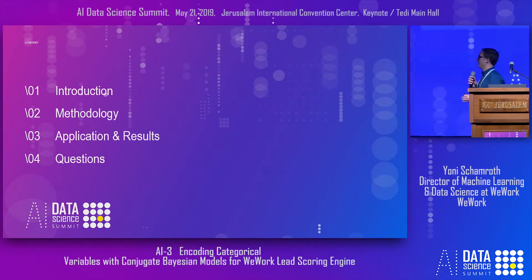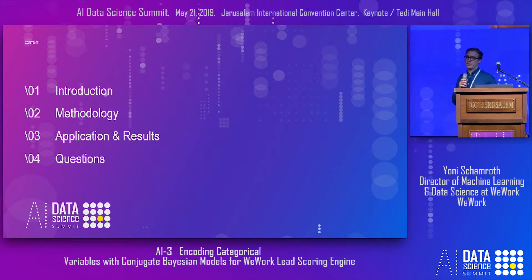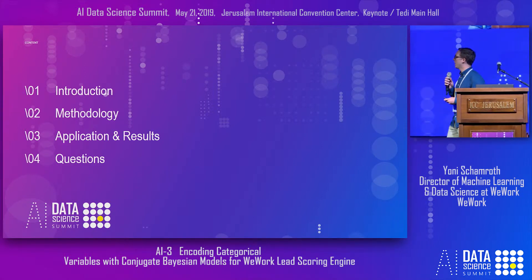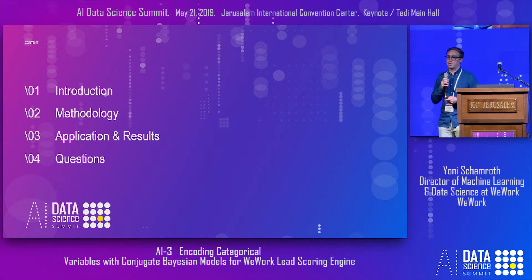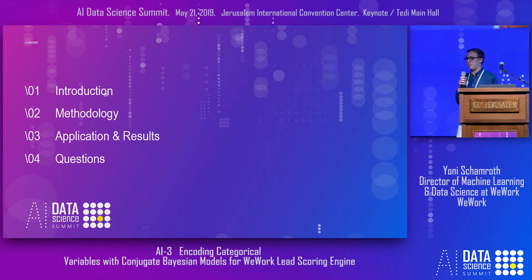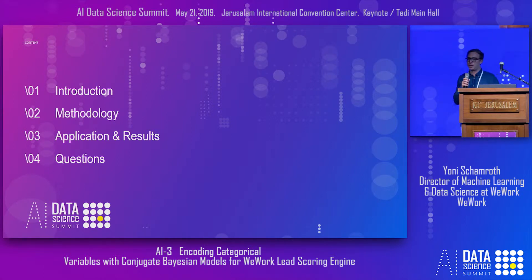I'm going to introduce the problem and some common techniques to deal with categorical variables, and then I'm going to propose a new methodology. We're going to go into some experimental results and an application that we did at WeWork with lead scoring. That should leave us some time for questions, and I'll link to a more detailed paper and some code available on GitHub.